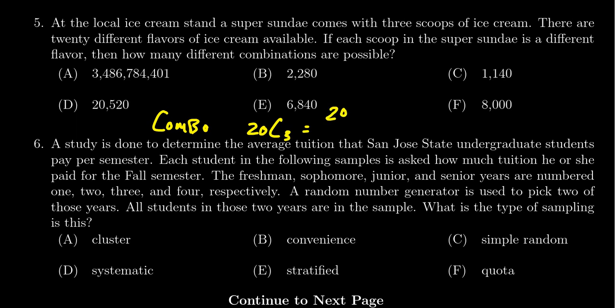So we're going to get 20 time. Well, we'll get 20 factorial on top. We get three factorial and then 17 factorial on the bottom.